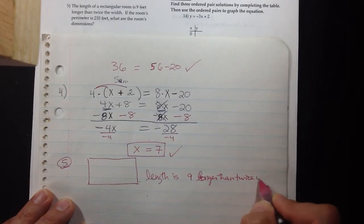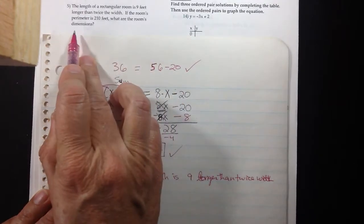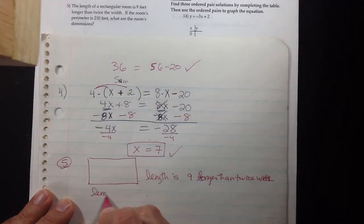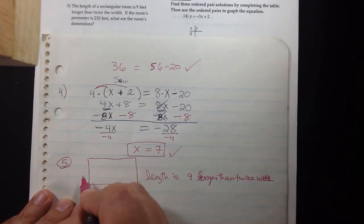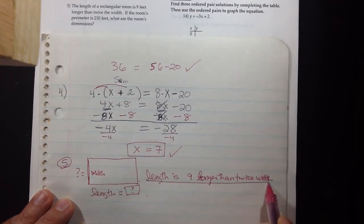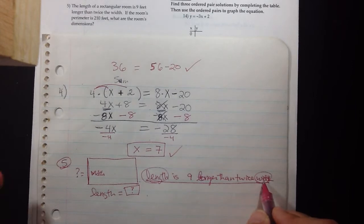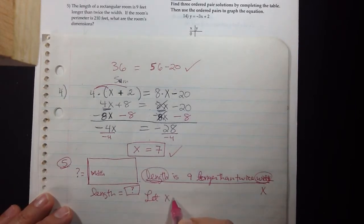So we don't know the length nor do we know the width. Usually width is the vertical distance, so we don't know either one. But whenever you have a phrase or sentence that connects the unknowns length and width, let X be the thing, the variable mentioned later. So we're going to begin this by letting X be the width.